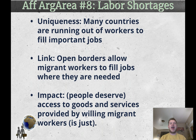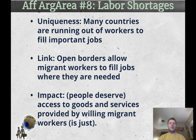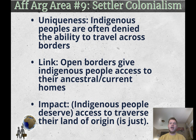Eighth is labor shortages — an economic argument for the affirmative. A lot of countries, especially the United States, have more job openings than people to fill them. In many countries where populations are declining due to lack of immigration and people having fewer children, an open borders policy would allow migrant workers from countries with not enough jobs to move to countries with not enough people to fill available jobs. When those jobs are filled, everybody's life gets better — having a job means you can feed your family, and doing the job provides goods and services to others. The impact: access to goods and services provided by willing migrant workers is just.